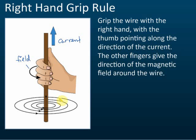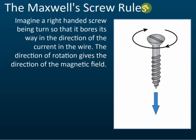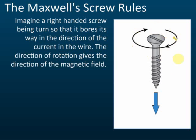For Maxwell's screw rule, imagine you have a screw. The sharp end of the screw shows the direction of the current. Then imagine tightening a screw — when you tighten a screw with a screwdriver, you always turn it clockwise, and that is the direction of the field. So the sharp end points in the direction of the current, and the clockwise rotation gives the direction of the field.